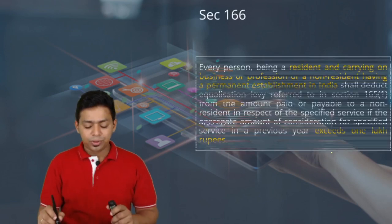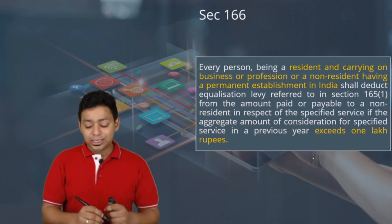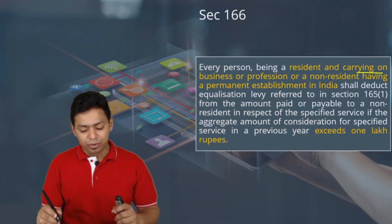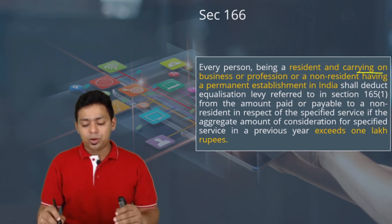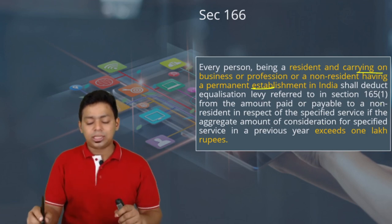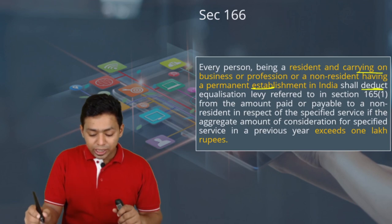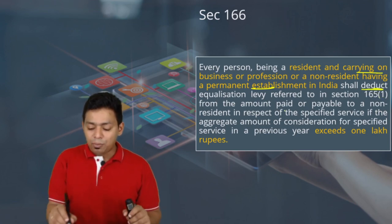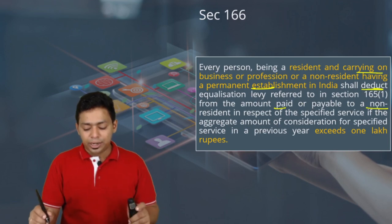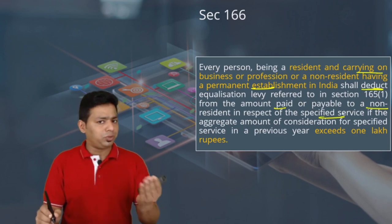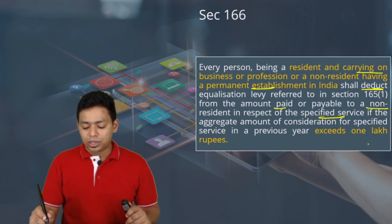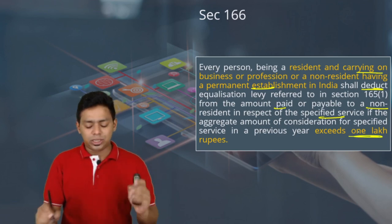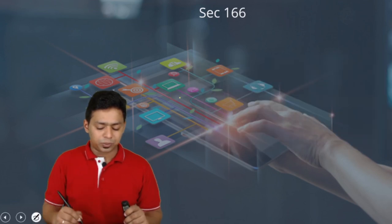Section 166 deals with collection and recovery of equalization levy — this is the old section for 6 percent. Every person being a resident carrying on business or profession, or a non-resident having a permanent establishment in India, shall deduct equalization levy referred in Section 165 from the amount paid or payable to a non-resident in respect of specified services (advertisement), if the aggregate consideration exceeds one lakh rupees — at the rate of 6 percent.